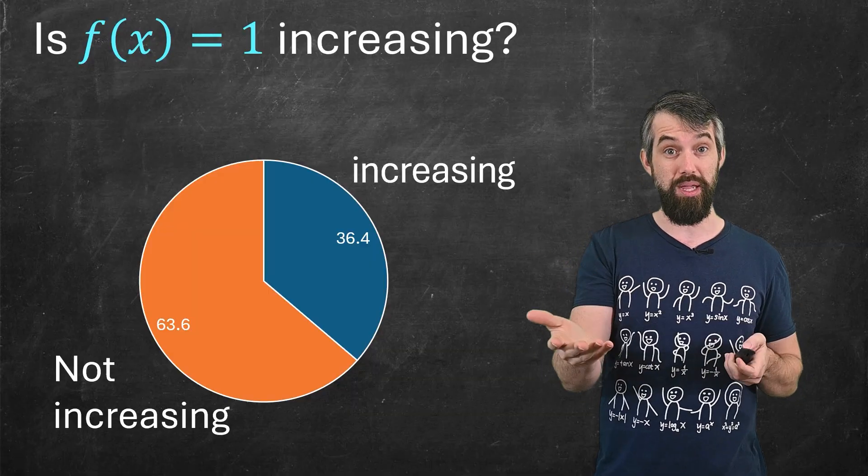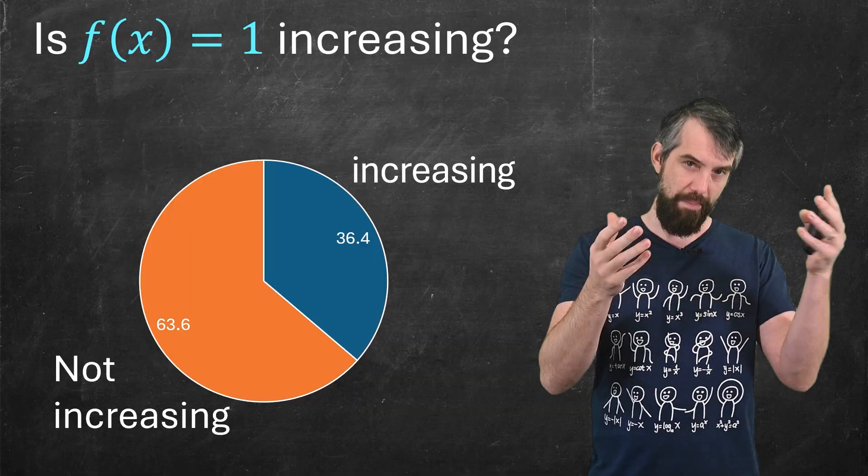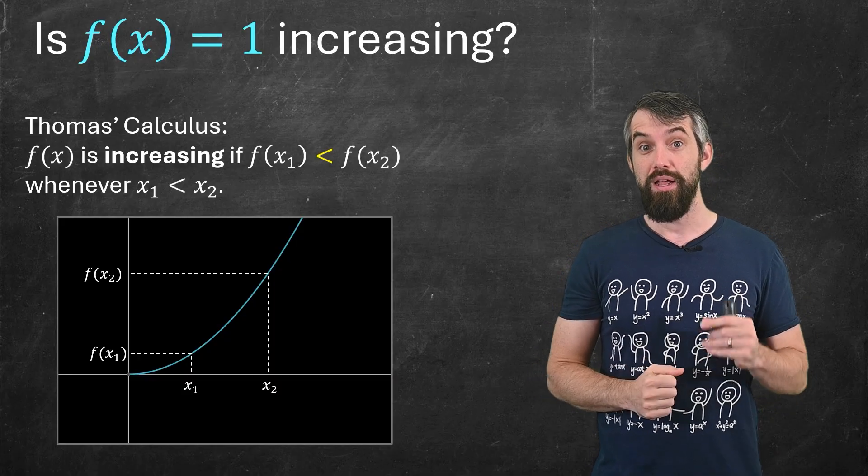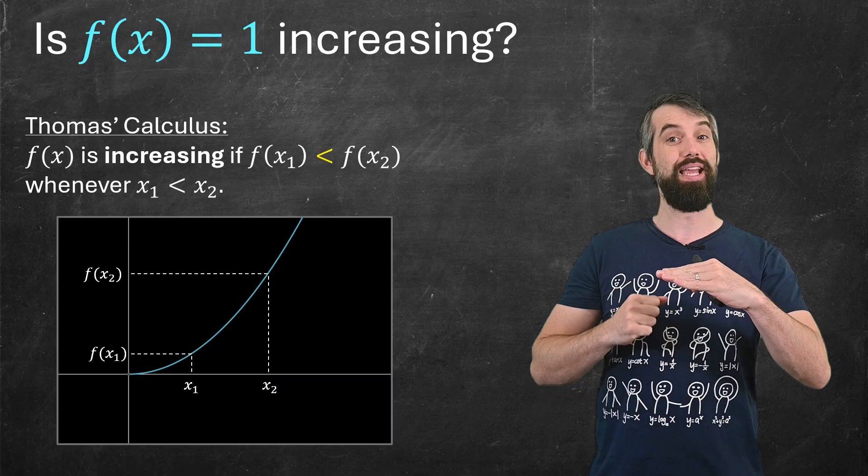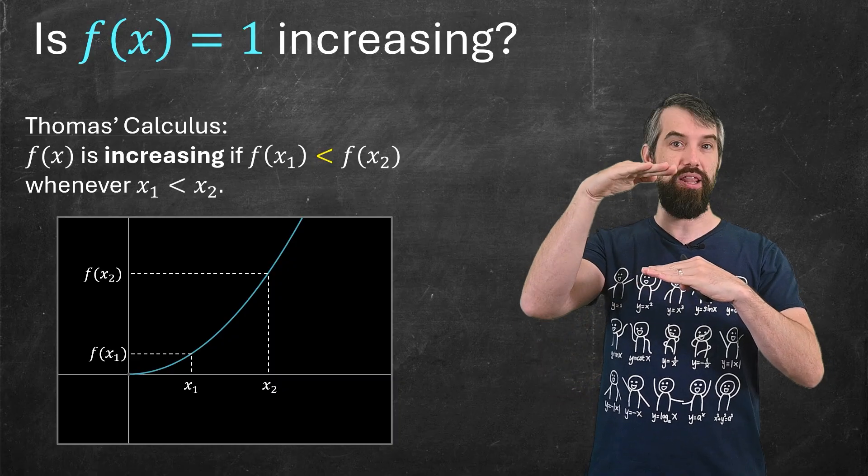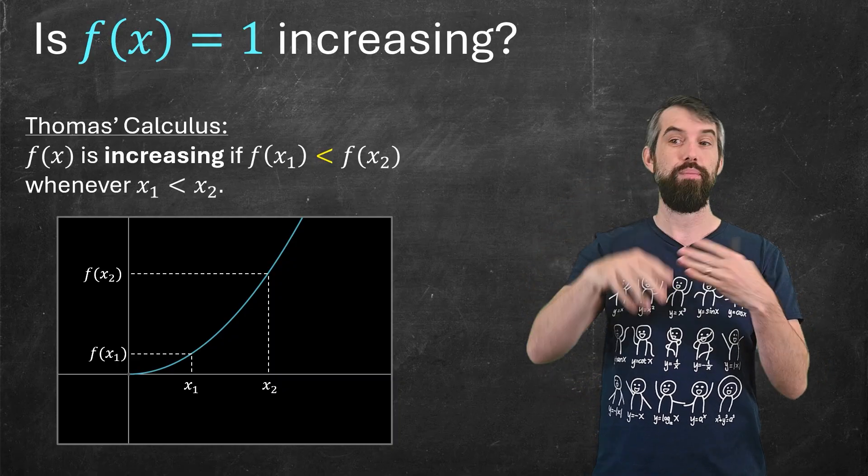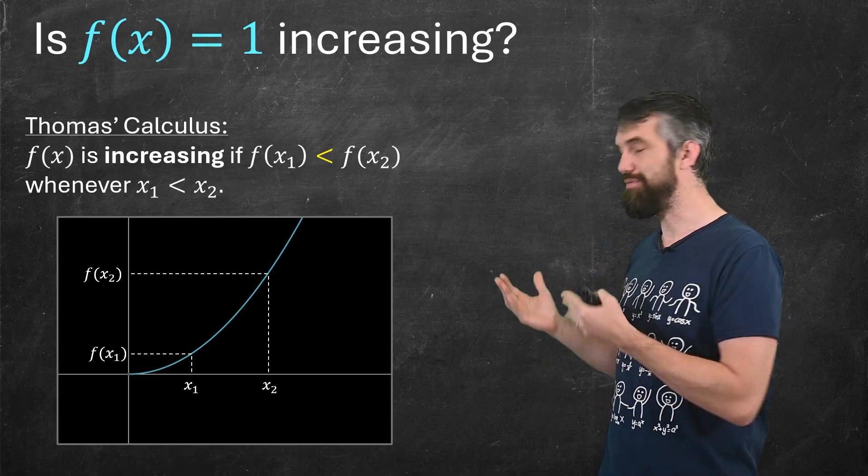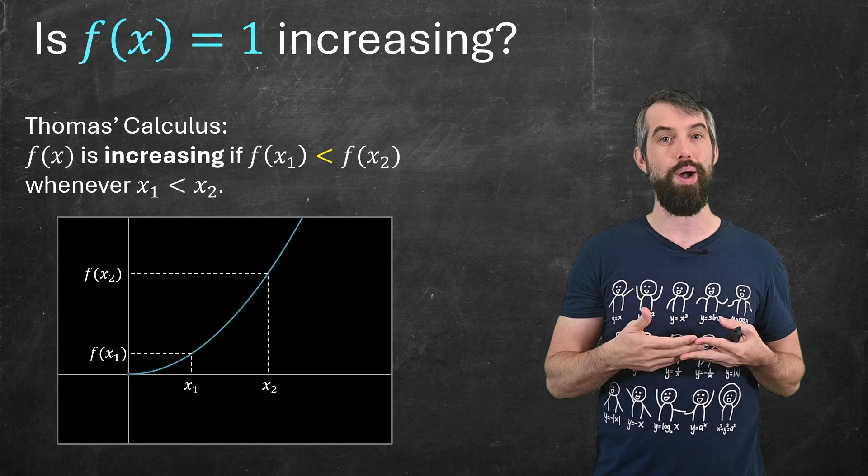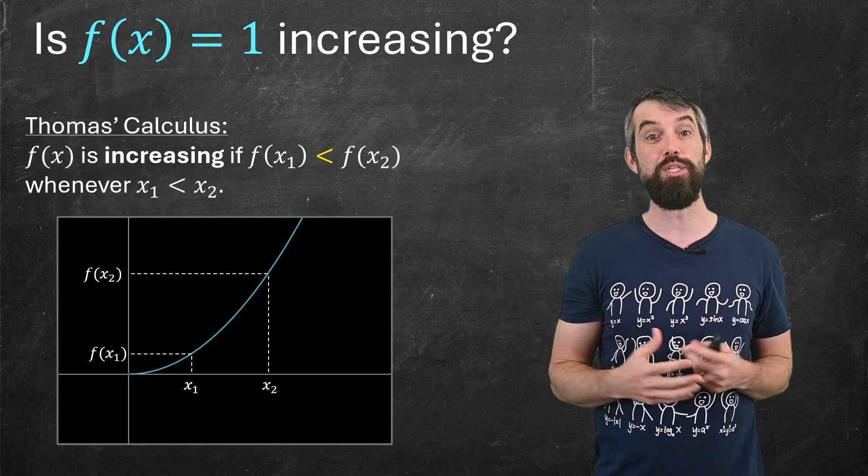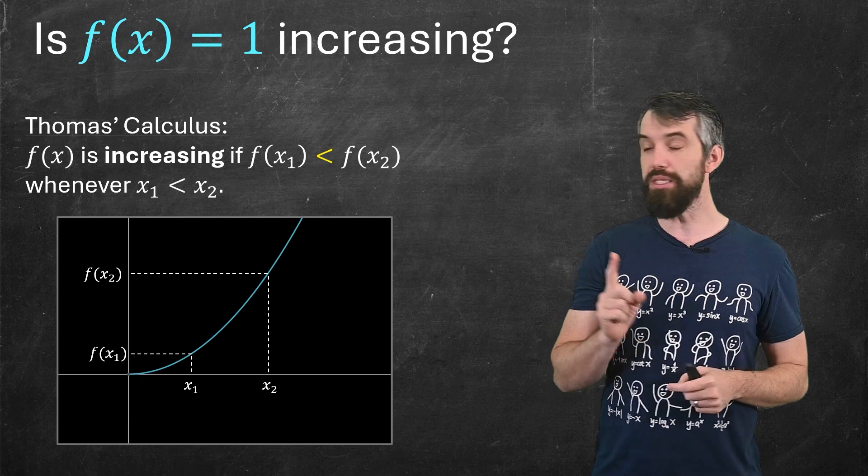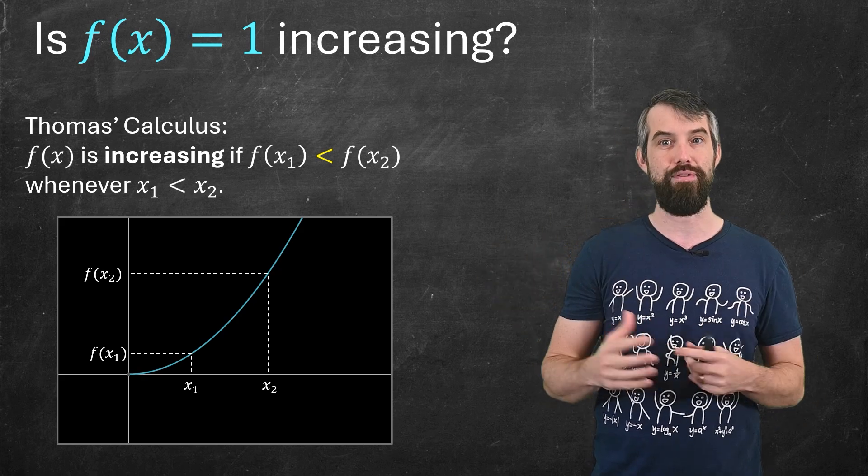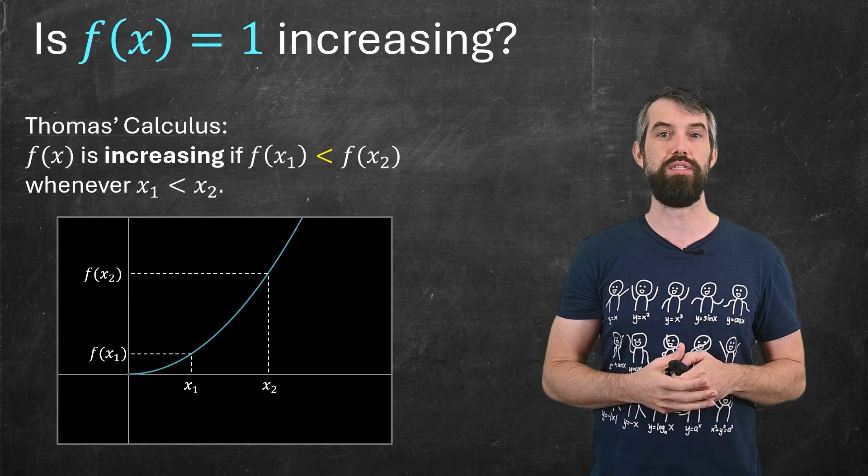So here's the definition, going back to Thomas's Calculus. It says that the function is increasing if the function value at one point is strictly less than the function value at another point whenever x1 is less than x2. So if you have two inputs and one's less than the other, then the outputs have one being less than the other. A sensible notion of increasing. But notice the strict inequality here, f(x1) is less than f(x2). In other sources, like for example, go to Wolfram right now, they say less than or equal to here.